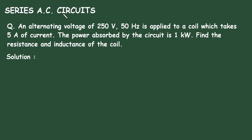Series AC Circuits question. An alternating voltage of 250V, 50Hz is applied to a coil which takes 5A of current. The power absorbed by the circuit is 1kW. Find the resistance and inductance of the coil.